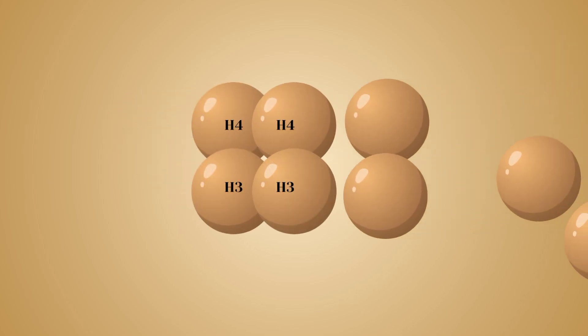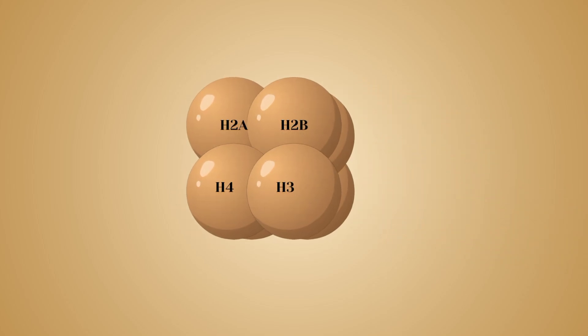One molecule of H2A histone protein binds to H2B histone protein to form a heterodimer. Subsequently, one more such heterodimer is formed. These heterodimers bind to the tetramer and form an octamer structure called the nucleosome core.